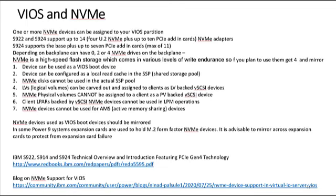Finally, under storage, I want to talk quickly about VIOS and NVMe. You can have one or more NVMe devices assigned to your VIO server — you have 922 and 924 support, up to 14 of them. It's a high-speed flash device; you can use it as a VIO server boot disk. You cannot use it in the shared storage pool, but you can use it for local read cache for the shared storage pool. You can't assign it to a client as a physical volume, so you can't use NVMe for vSCSI to assign to a client. I tend to use NVMe just for VIO server boot disks.